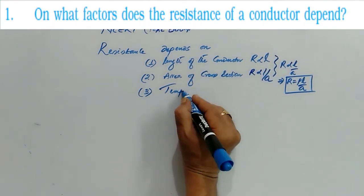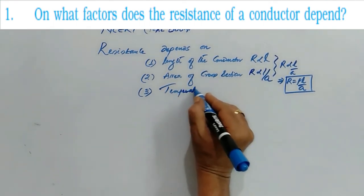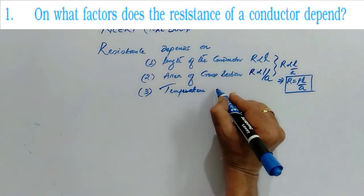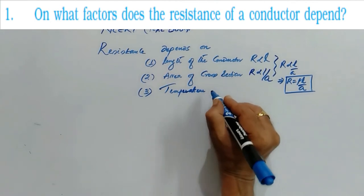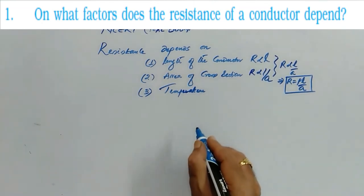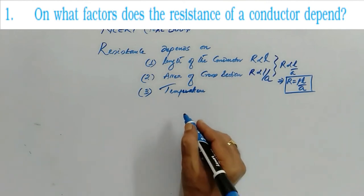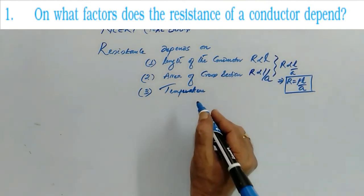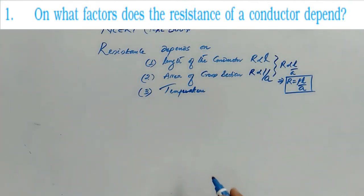If you increase the temperature, the resistance is also increased because the collisions between two electrons or electrons and the atoms will be increased. So if the temperature is increased, the resistance is also increased.